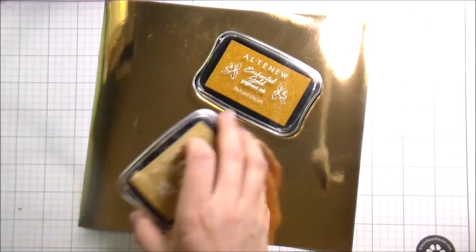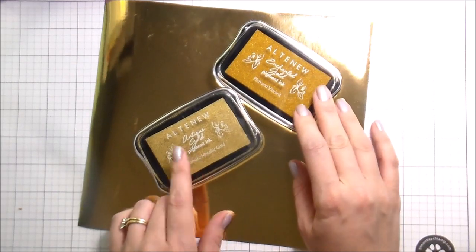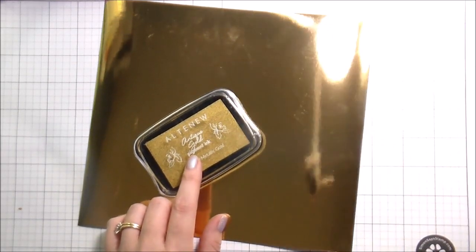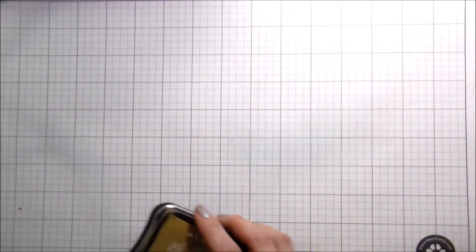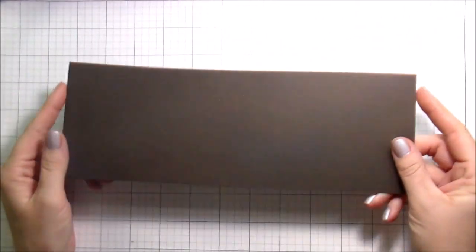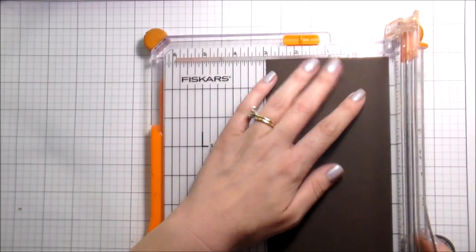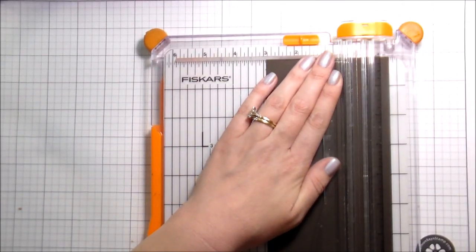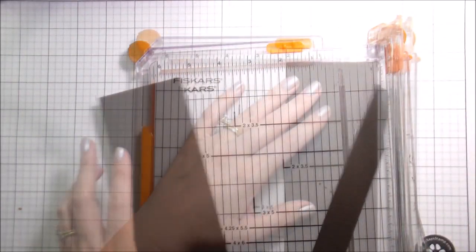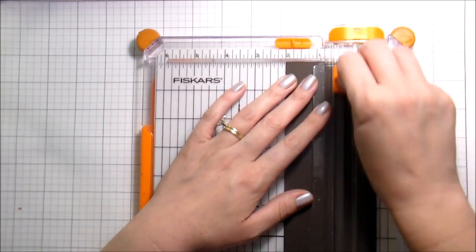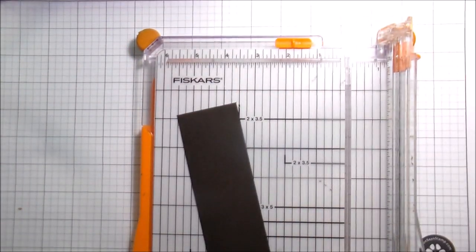I'm doing a slimline card because I can't stop myself. Let's talk about the gold. So here I have some gold mirror paper and two different gold inks by Altenew. It matched the antique gold a little bit better, so that's the one I'm going to be using. And then I have some chocolate brown cardstock from Simon Says Stamp.